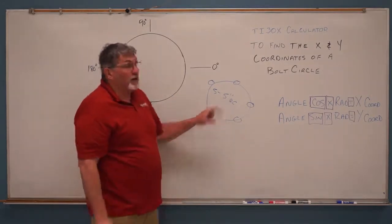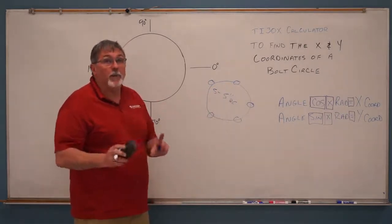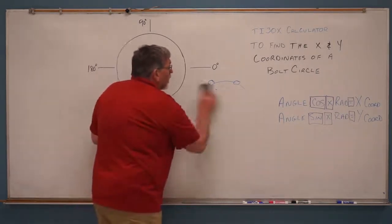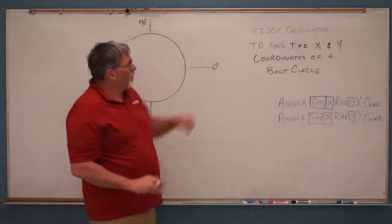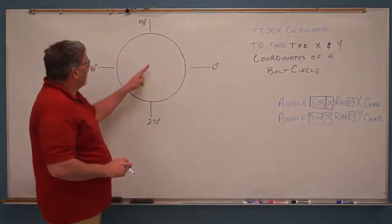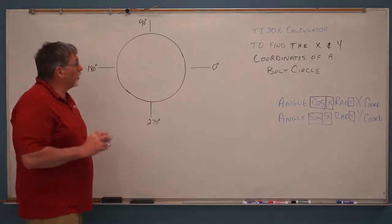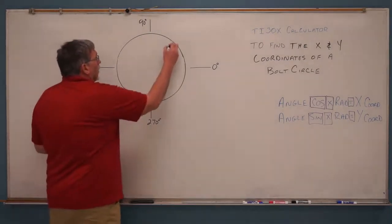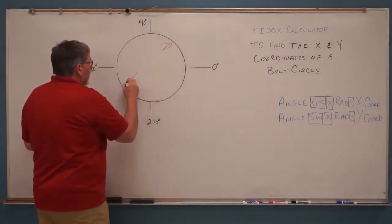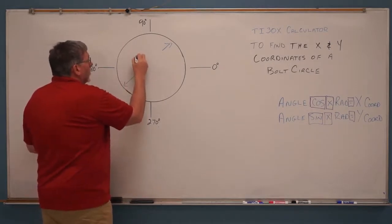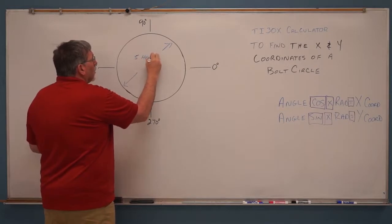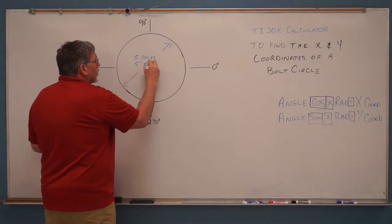It's implied because it's a bolt circle that those holes are evenly spaced. So let's look at this. We're going to talk about how to do this in our TI-30 calculator in just a minute. Let's look at a circle first if we have to define a couple things. So we're going to solve our problem: five holes with a five inch bolt circle.